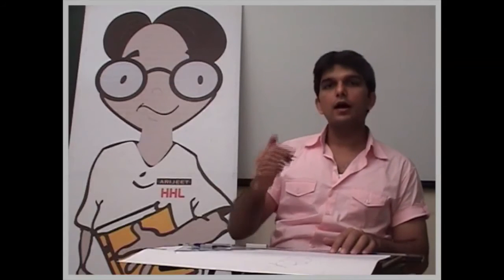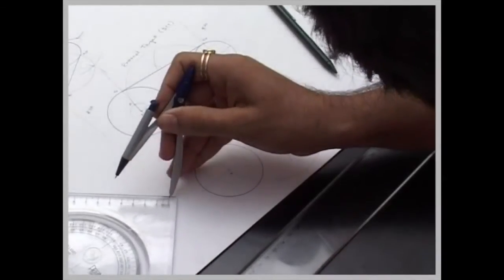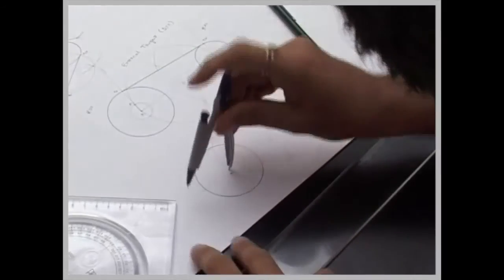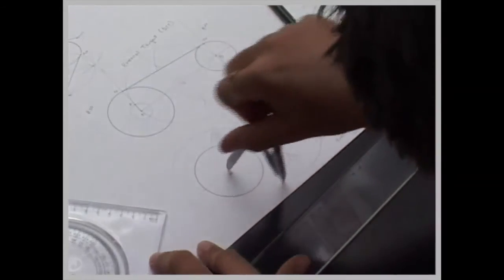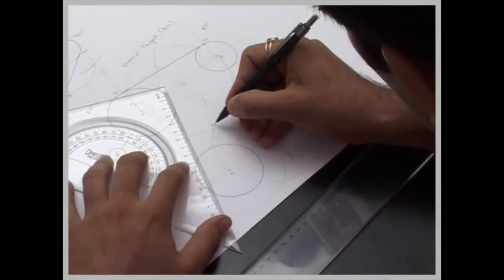Transverse common tangent. Now in this case, when we were doing external tangent, it was direct common tangent. At that time we have taken D, D means deduct. Now in this case, internal tangent, it is transverse common tangent. So T means total. So we will take 30 plus 20, it will be 50. So we will take 50 as radius and we will draw outside the bigger circle.